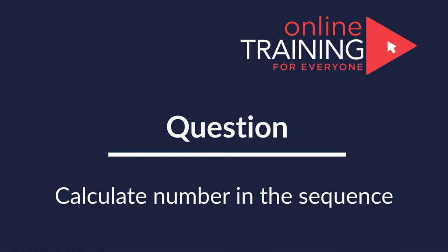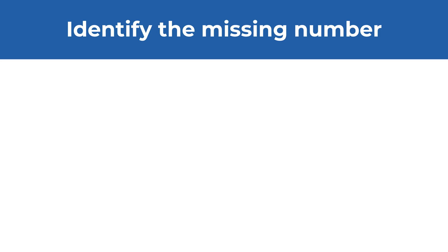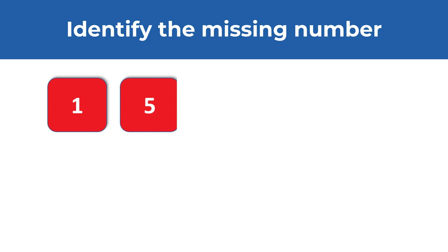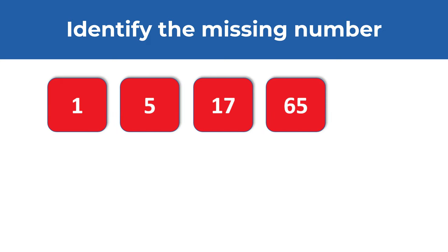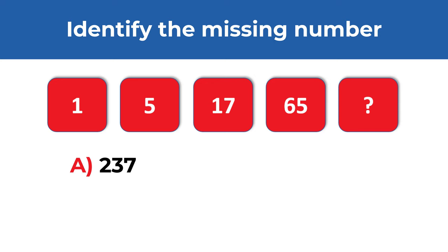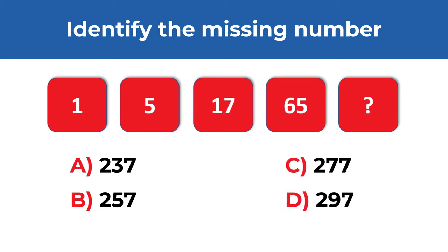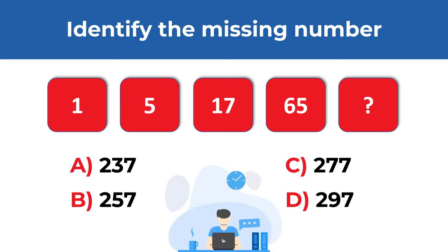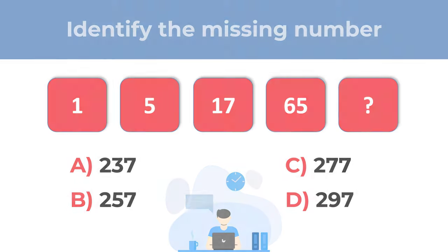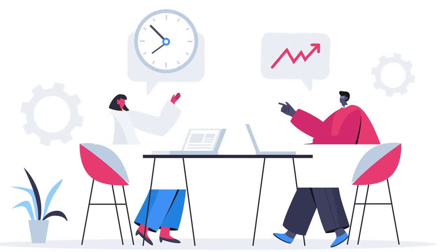Here's a question from the real test where you're presented with a sequence of numbers and need to identify the missing number. The numbers are 1, 5, 17, 65, and then the missing number. You have four choices: choice A, 237; choice B, 257; choice C, 277; choice D, 297. Give yourself a little time — pause the video to see if you can come up with the solution.